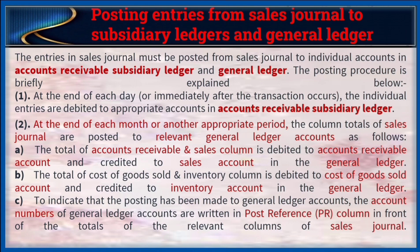Posting entries from the sales journal to subsidiary ledgers and general ledgers. Number 1: at the end of each day, or immediately after a transaction occurs, individual entries are debited to appropriate accounts in the accounts receivable subsidiary ledger. Number 2: at the end of each month, the column totals of the sales journal are posted to the general ledger as follows — (A) the total of the accounts receivable and sales column is debited to accounts receivable and credited to sales in the general ledger; (B) the total of the cost of goods sold and inventory column is debited to cost of goods sold and credited to inventory in the general ledger. To indicate that posting has been made, the account numbers of general ledger accounts are written in the PR column in front of the relevant column totals.